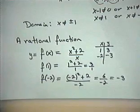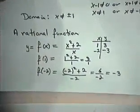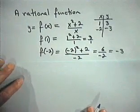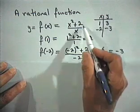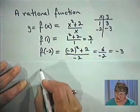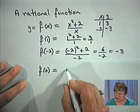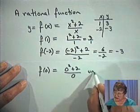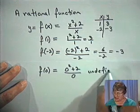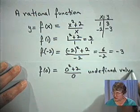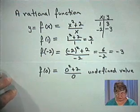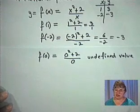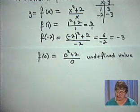As with rational expressions, we have to be careful that the function is well defined. We cannot give the function a value of x that makes x squared plus 2 over x undefined. For example, f(0) would give us 0 squared plus 2 divided by 0, and because we're dividing by 0, this is an undefined value — it's not in the domain of the function. Rational functions are similar to rational expressions; we can evaluate them for any value of x in their domain.